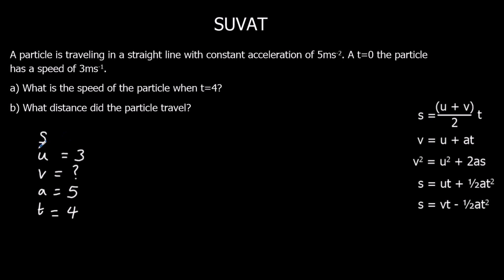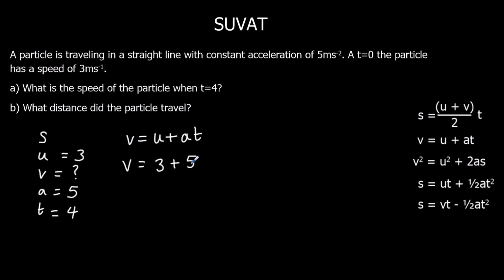We want an equation without S in it. We're going to use V equals U plus AT. Substituting what we know: V equals 3 plus 5 times 4, which is 3 plus 20, giving 23 meters per second.